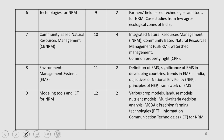Next, technologies for natural resource management, with around two classes discussing farmers' field-based technologies and tools for NRM — that means what technologies are exactly useful at the farm level. We will also discuss a few real case studies from various agroecological zones of India, to give a real feeling of how on-ground activities can be managed. Next is CBNRM, which we call community-based natural resources management — a very, very important concept.